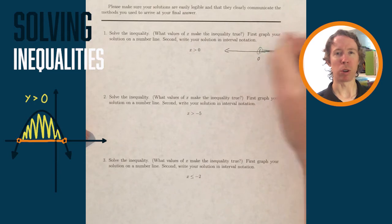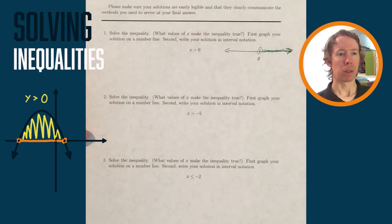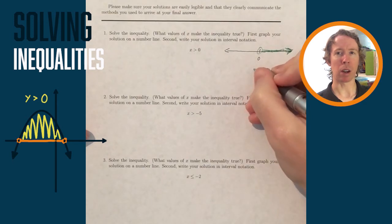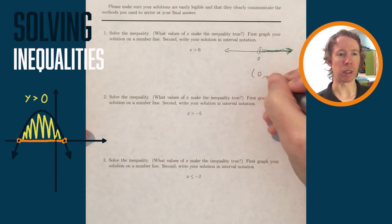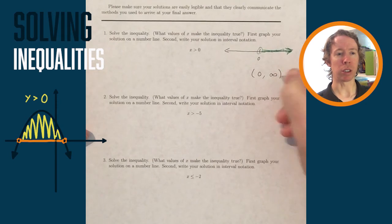Where zero we usually put in the middle, so x greater than zero is to the right of that. I'll put an open circle around zero to say it's not included, and then for interval notation...